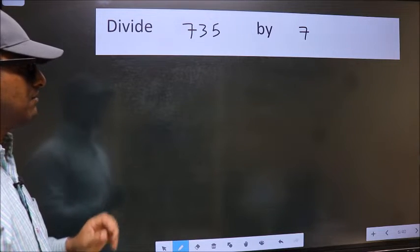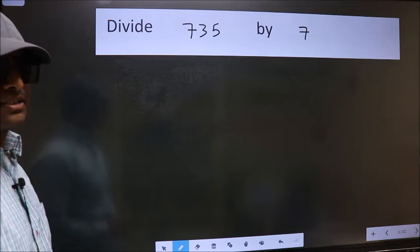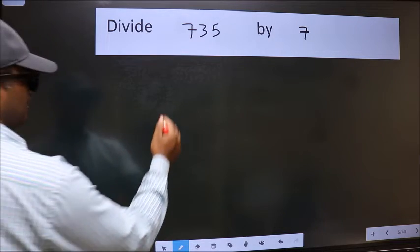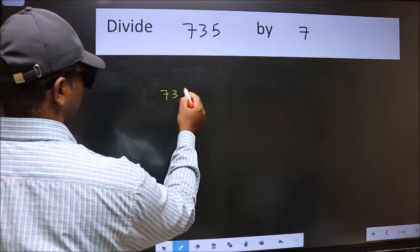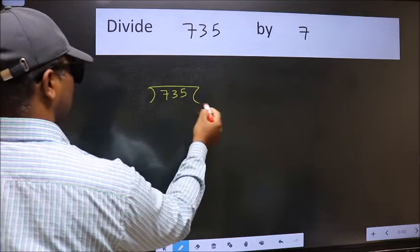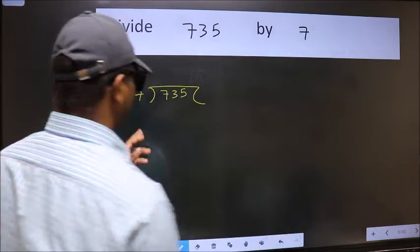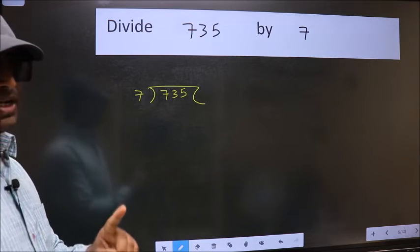Divide 7.35 by 7. To do this division, we should frame it in this way. 7.35 here and 7 here. This is your step 1.